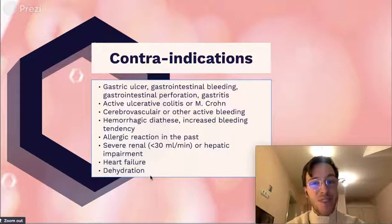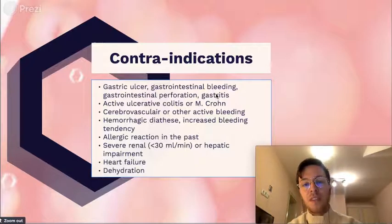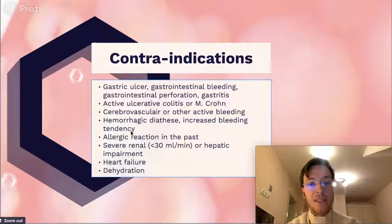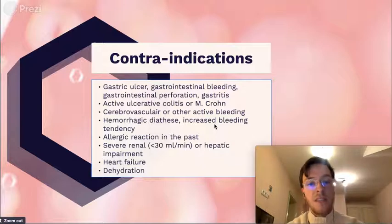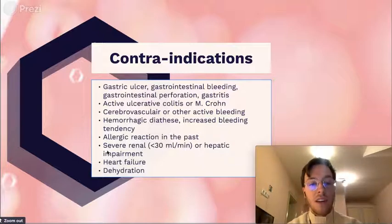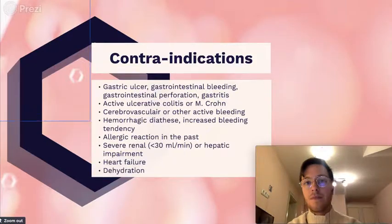There are some contraindications: gastric ulcers, bleedings, gastritis, inactive ulcerative colitis or Crohn's disease, cerebrovascular or other bleedings, increased bleeding tendencies, allergic reaction in the past to ibuprofen or another NSAID, severe renal or hepatic impairment, heart failure, and dehydration. Always check those before prescribing ibuprofen.